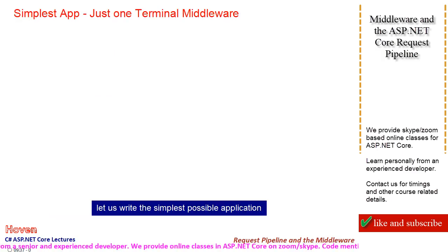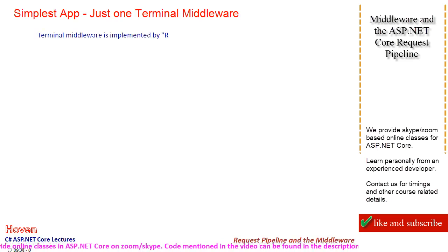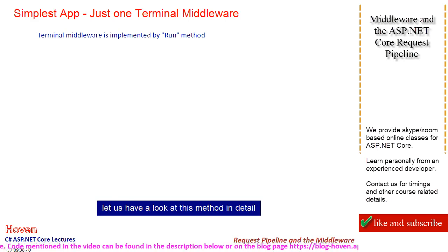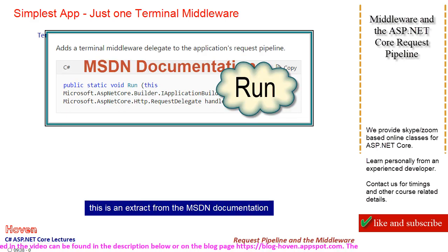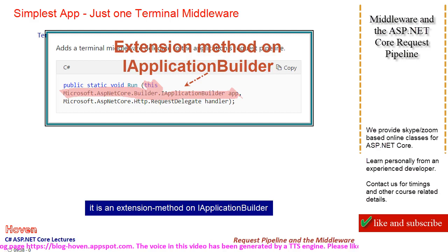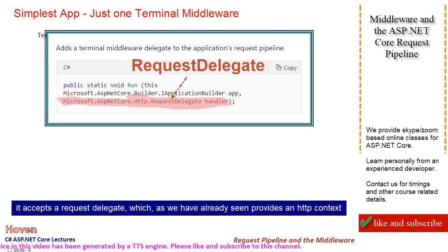Let us write the simplest possible application. It will contain just one component — just the terminal middleware. Terminal middleware can be implemented with Run. Let us have a look at this method in detail. This is an extract from the MSDN documentation. The Run method adds a terminal middleware to an application pipeline. It is an extension method on IApplicationBuilder. It accepts a request delegate.